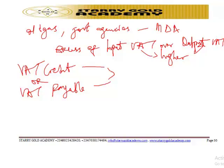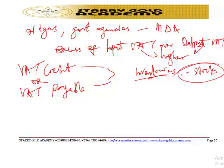If the VAT liability computation includes inventories — such as stocks of items or materials — there will be a need to further adjust the input VAT. To do this, the period VAT purchases are first adjusted by adding the cost of opening inventory, effectively determining the cost of sales. You start with your opening inventory.